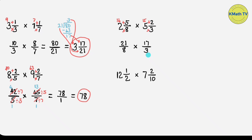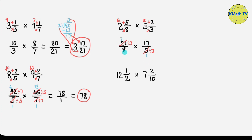Now let's proceed to the second step, which is to multiply. In this problem we can use cancellation. We can cancel the numerator 21 and the denominator 3 because 21 is divisible by 3. The GCF of 21 and 3 is 3. Let's divide them by 3: 21 divided by 3 equals 7, and 3 divided by 3 equals 1.